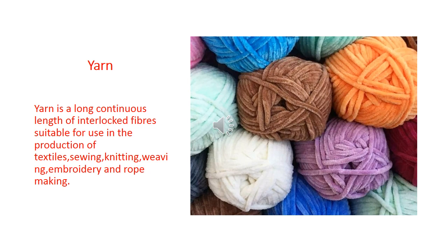Here is a picture of yarn. What is meant by yarn? Yarn is a long, continuous length of interlocked fibers suitable for use in the production of textiles — for sewing, knitting, weaving, embroidery, and rope making. All these yarns are used for different types of fabrics which we prepare for our daily use. These yarns come in a variety of colors and shapes, and from them we make different clothes.